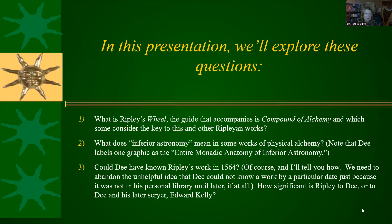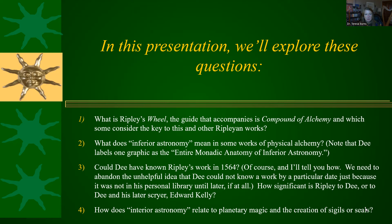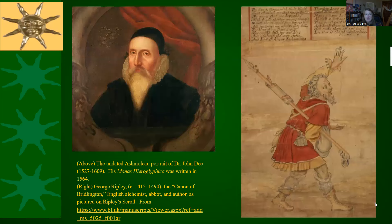Why would Dee be interested in Ripley? He seems interested in almost everything, but if he is going to be interested in even one English alchemist, it would be Ripley, because Ripley is the first English alchemist to achieve the Philosopher's Stone, according to people who write about Ripley. When we see how Ripley is using it, there will be a direct carryover to how you make magical seals. Those interested in ceremonial magic and things like Dee's Seal of Emmet in his later Enochian work will want to note how that is.